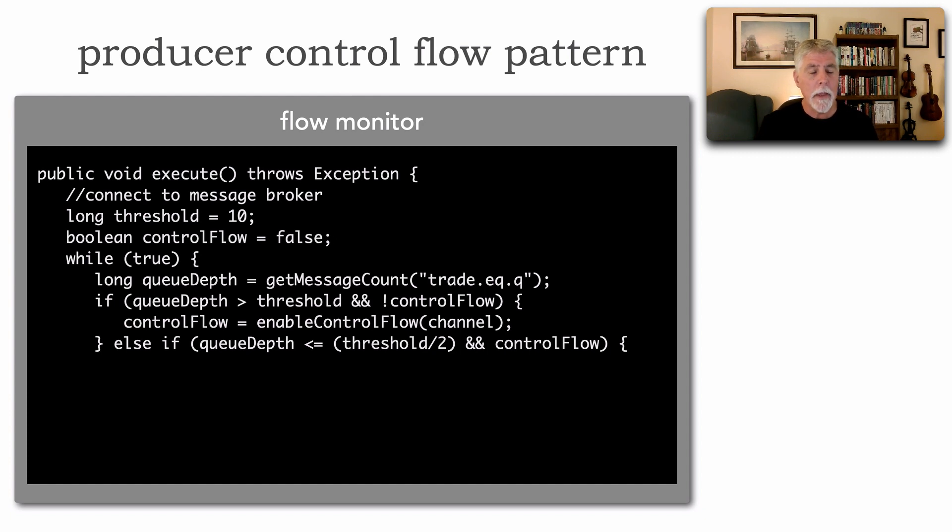Otherwise if the queue depth is less than a lower threshold number and we're in control flow then we disable the control flow. We tell everybody to speed back up. And I continue to do this let's say every three seconds. I just keep checking the queue depth. Now these are all different configuration parameters that we can vary.